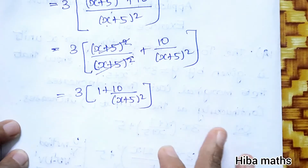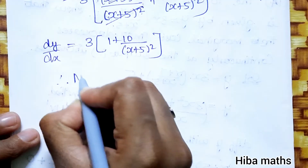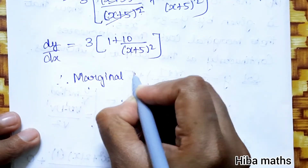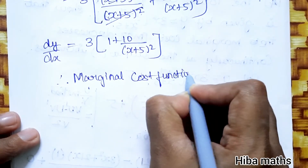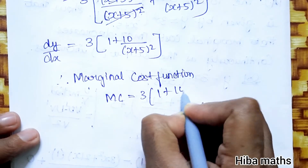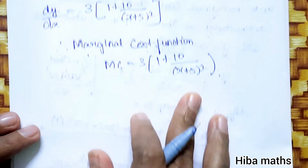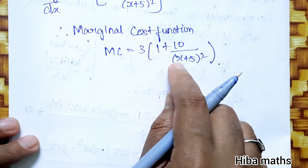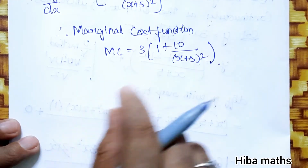Therefore, the marginal cost MC equals dy/dx equals 3 times [1 plus 10 divided by (x plus 5) whole squared]. As x increases, (x plus 5) squared in the denominator increases, so the fraction 10/(x plus 5)² decreases, and therefore MC decreases as x increases.